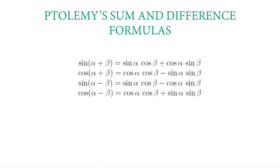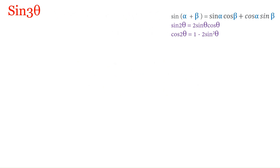We'll start with sin 3θ, but before that we have to know the sum and difference formulas. Here you can see the basic formulas we will be using: sin(α + β), cos(α + β), sin(α − β), and cos(α − β). To derive sin 3θ, we need the sum and difference formula for sin(α + β), the formula for sin 2θ, and also the cos 2θ formula.